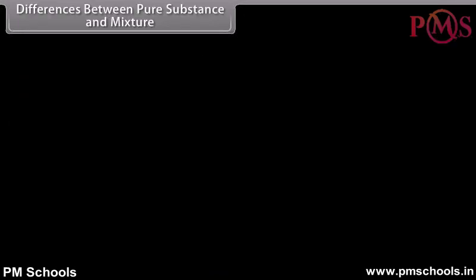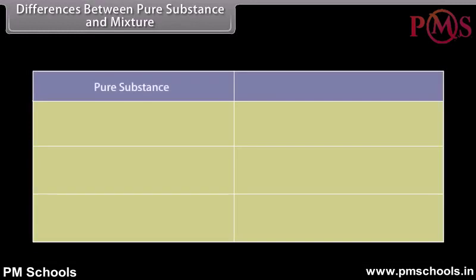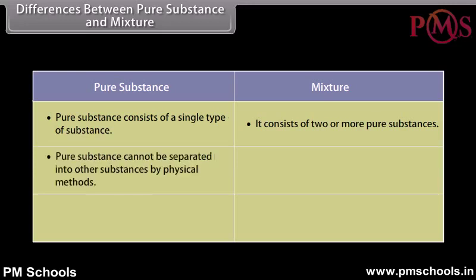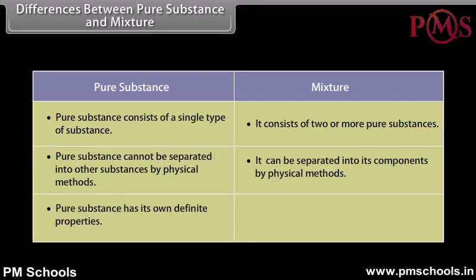Differences between pure substances and mixtures: A pure substance consists of a single type of substance, whereas a mixture consists of two or more pure substances. A pure substance cannot be separated into other substances by physical methods, but mixtures can be separated into their components by physical methods. A pure substance has its own definite properties, while a mixture shows the properties of its components.